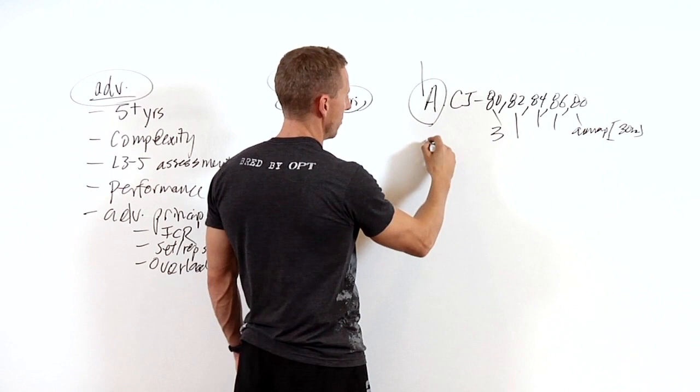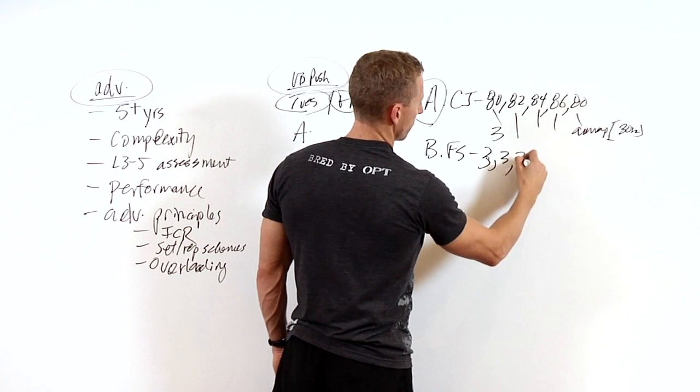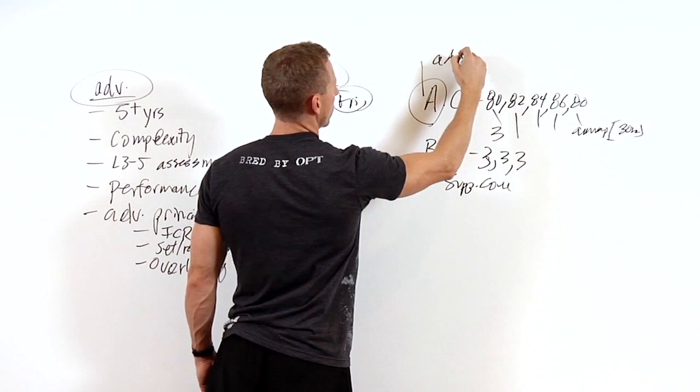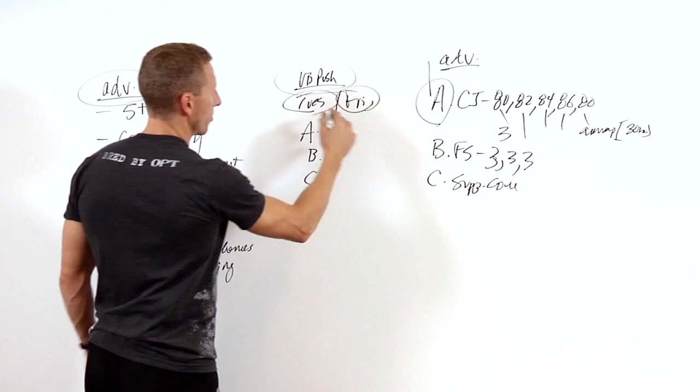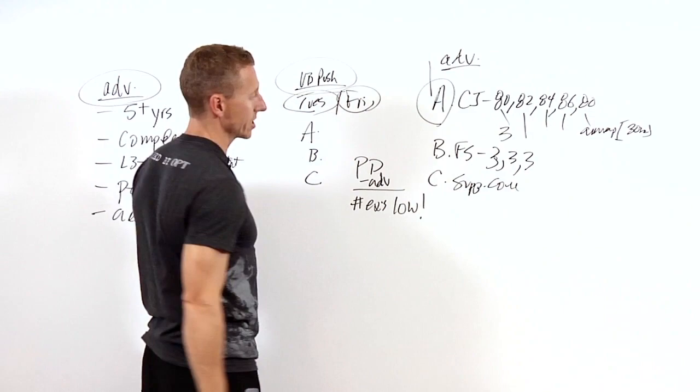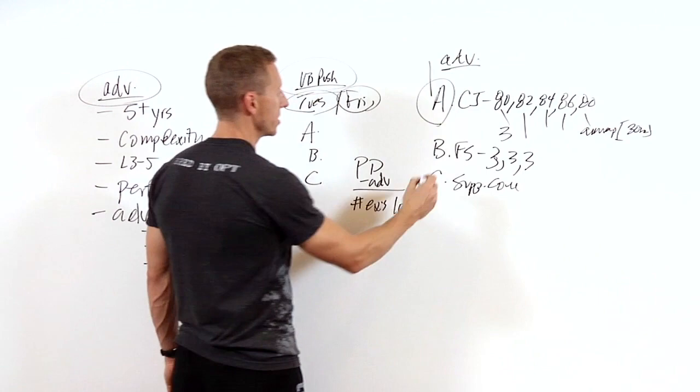For B, we're going to do front squat, three sets of three, and there's going to be a tempo, rest time, and everything prescribed with that. Then we may do some supplementary core work. You can see that the number of exercises has gone down. In the program design for advanced, the number of exercises is low based upon each weight training session. Clean and jerk, front squat, supplementary, done.